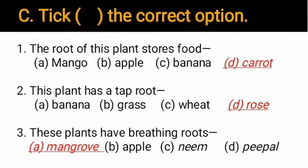Question C: Choose the correct option. One — the root of which plant stores food? Options: a) mango, b) apple, c) banana, d) carrot. Carrot is an edible root and it stores food, so D is the correct answer.